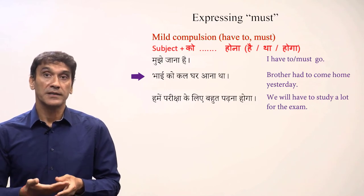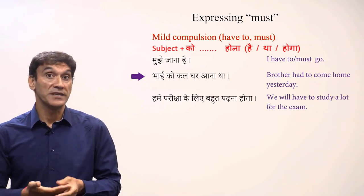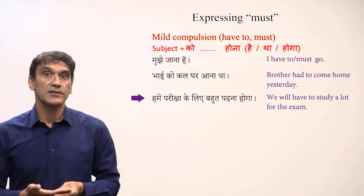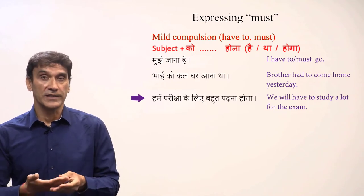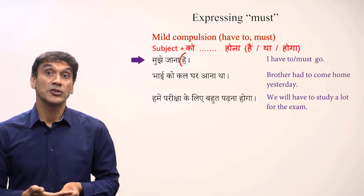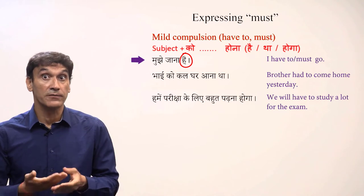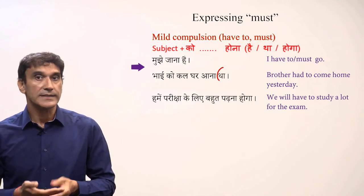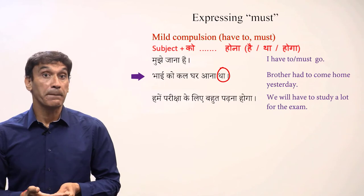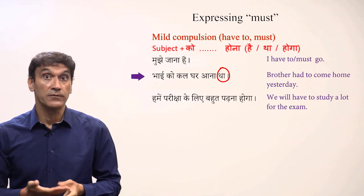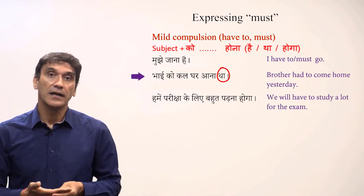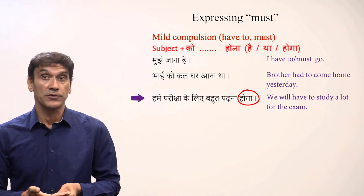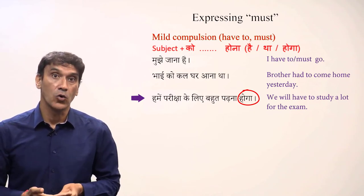More examples: bhai ko kal ghar ana tha — brother had to come home yesterday; humay pariksha ke liye bhot padhana hoga — we'll have to study a lot for the exam. The first sentence shows obligation in the present tense, so the verb is hai. The second sentence shows obligation in the past tense, so the verb is tha. The last one has the obligation in future tense with the future form of hona, that is hoga.